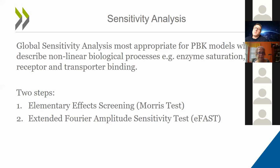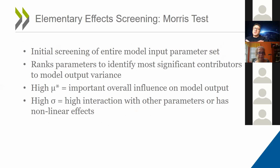The initial screening is for the entire model output. We rank those parameters using a couple of outputs. Mu is a parameter giving an idea of the overall influence that any given parameter has on the model output. Sigma gives an idea of how that parameter might interact with other parameters or reflect the nonlinear behavior of the model.